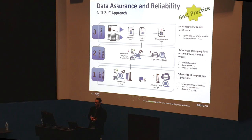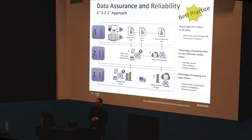When thinking about data assurance and reliability, there's a best-practice 3-2-1 approach: three copies of the data — a performance copy, a secure copy, and a disaster recovery copy — spread across two different media types to avoid media-related problems, such as disk, object storage, traditional tape, or even two different types of tape media. And the obvious one is an off-site copy, which could be as simple as putting tapes in the back of a car and driving them off-site.